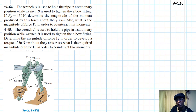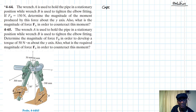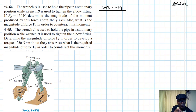This problem is from the Engineering Mechanics Statics textbook, 13th edition by Hibbeler. Let's start with case one, problem 4-64. We've been asked to find the magnitude of the moment produced about the y-axis due to FB, and also the magnitude of FA required to counteract this moment.